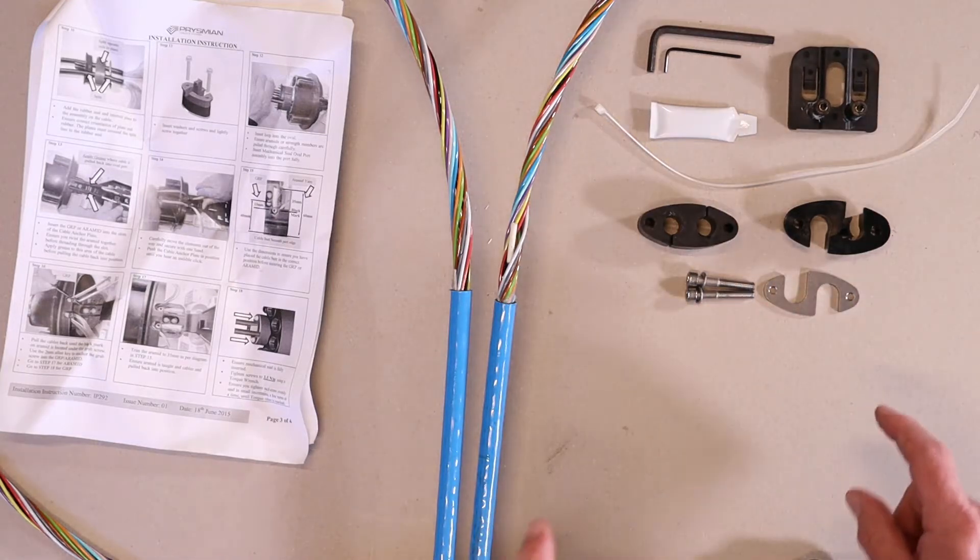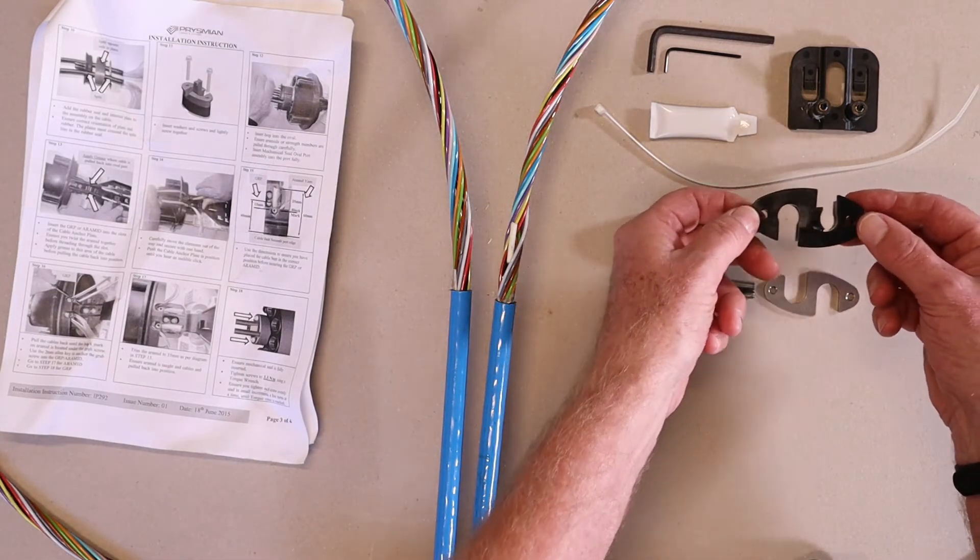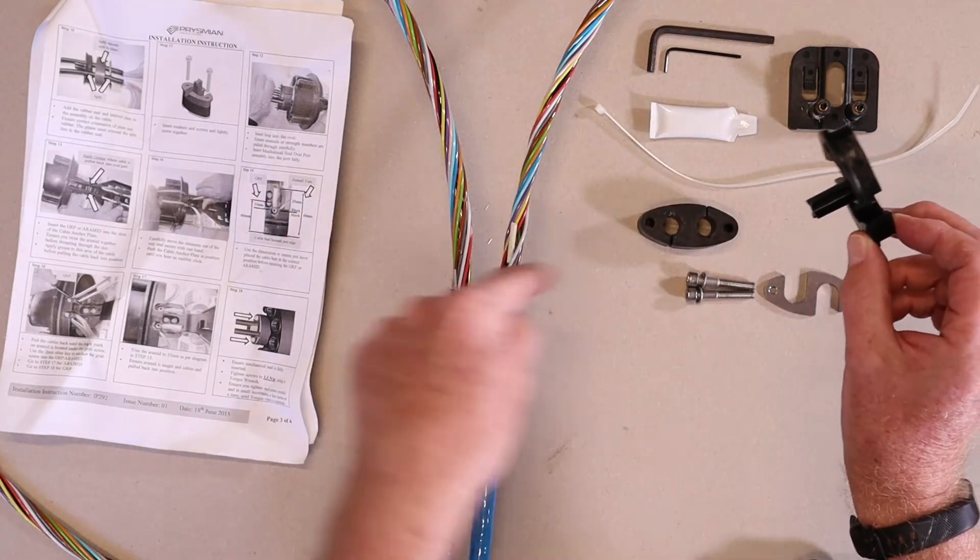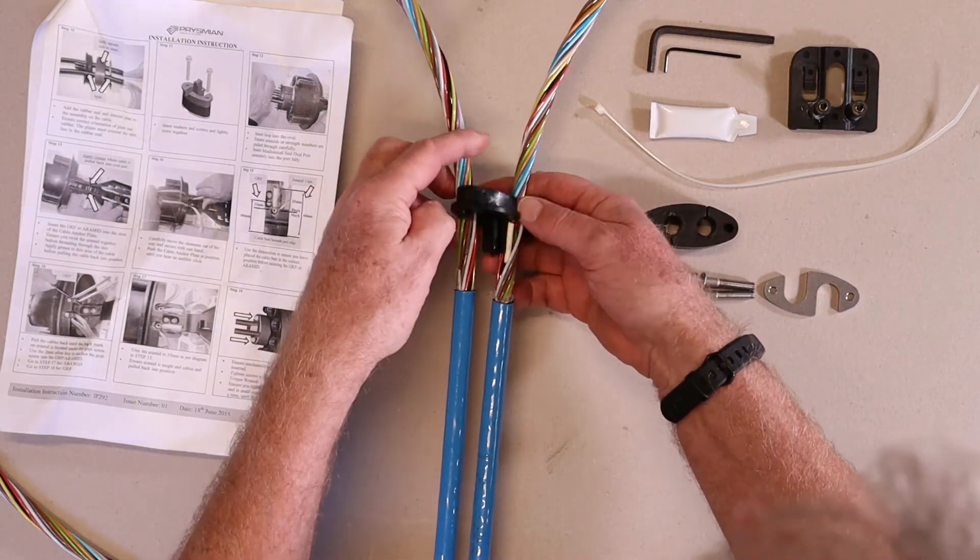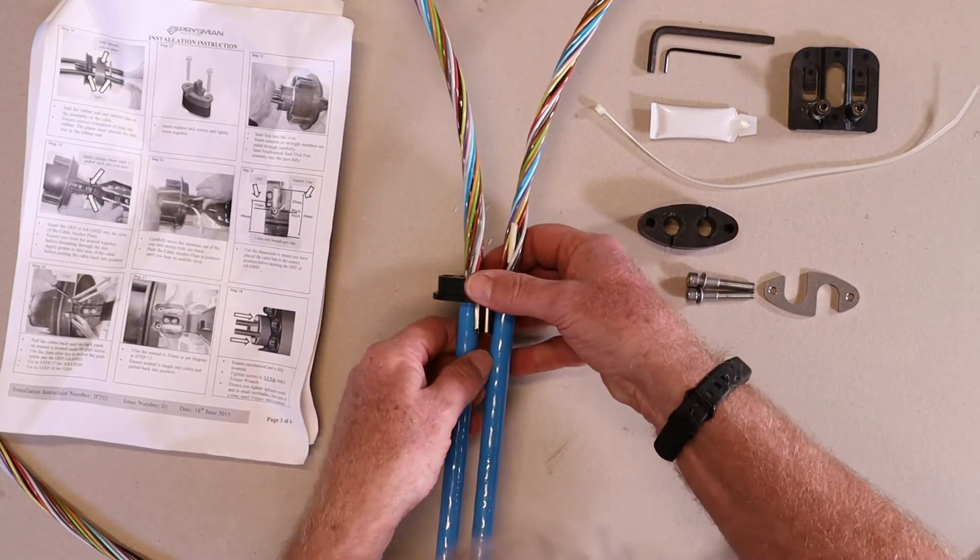To assemble this we start with the plastic side of the compression plate and slide it onto the cable. Note that this part goes down back towards the cable away from the joint. We just slide it down the cable a little bit.